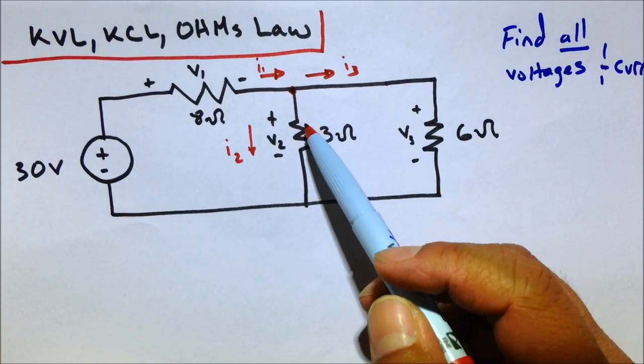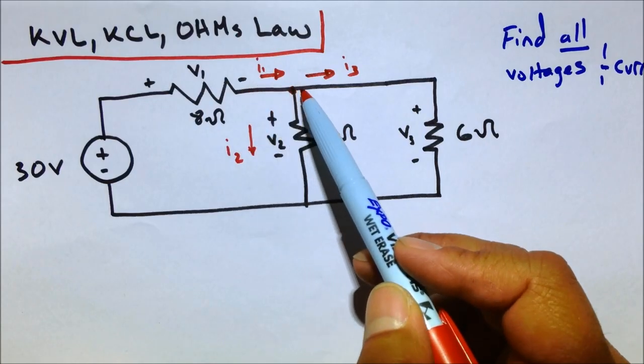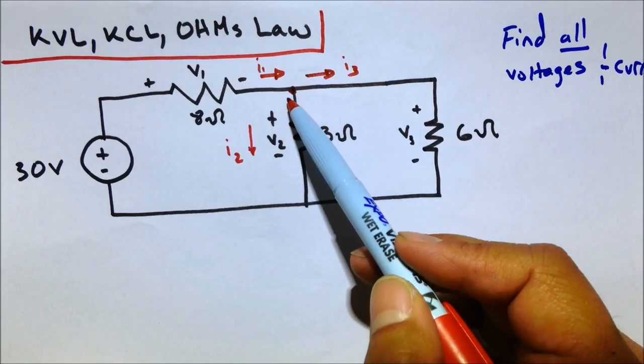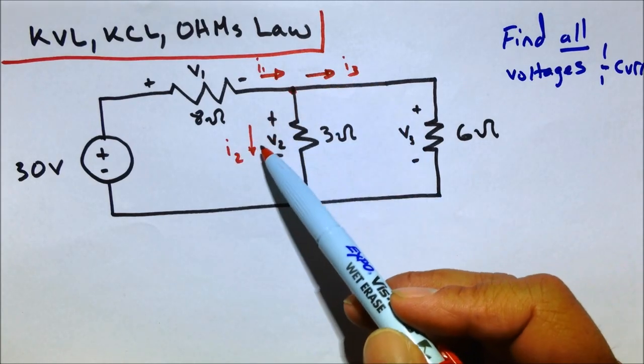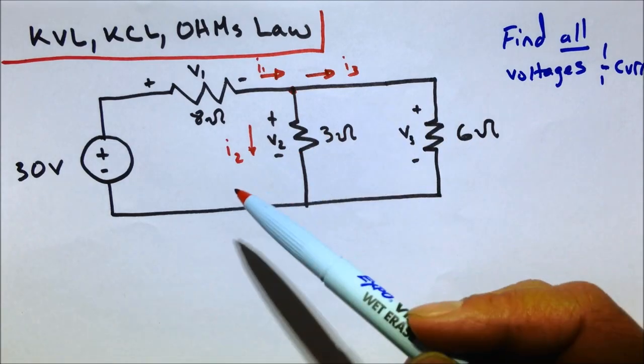And if we solve for these voltages and it turns out we have a negative voltage, all that means is that we need to reverse how we drew the polarity here. Same thing with the currents. I drew the current going into this node that way, and then out of it that way, and then out of it this way. But then when we solve for I's, if they turn out to be negative, then we just have to reverse the way we drew them.